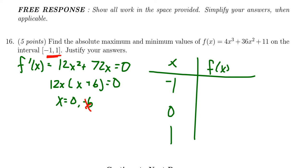So if we plug in -1 into the function, we're going to get f(-1) = -4 + 36 + 11, that's going to turn out to be 43. We have to compute f(0), which is going to be 11, and then we have to compute f(1), which is going to be 4 + 36 + 11, that turns out to be 51.